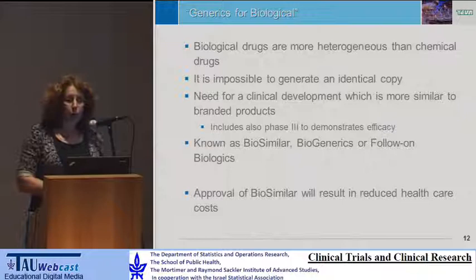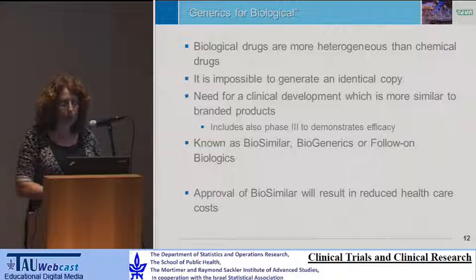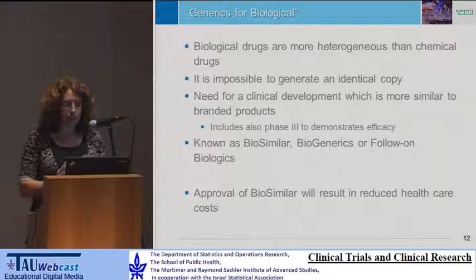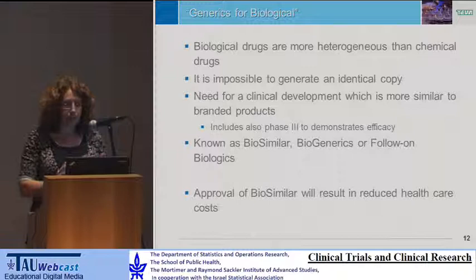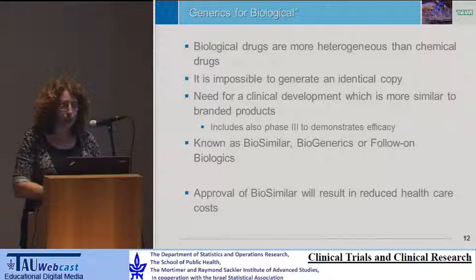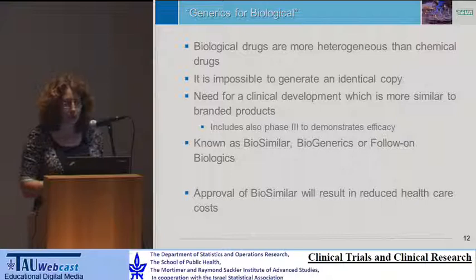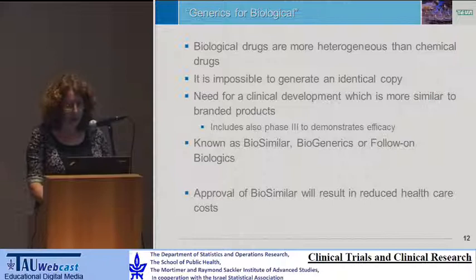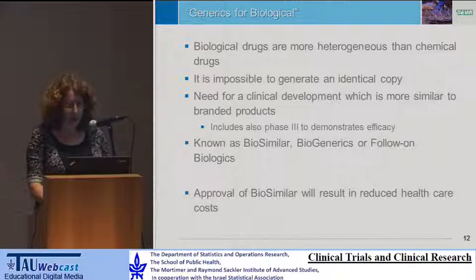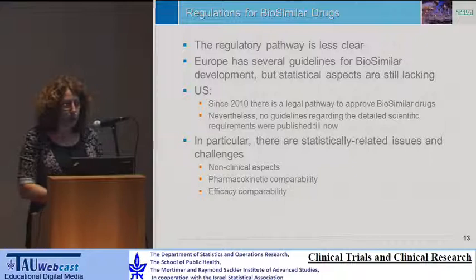What I described is the usual process for generics of chemical drugs, but not for biologics. The problem with biological drugs is that they are more heterogeneous, and it is understood that it's impossible to get an identical copy, in contrast to chemical drugs. So there is a need for a clinical development program more similar to the branded product — in particular, we need a phase three study to demonstrate efficacy. Because they cannot be identical, we do not use the term 'generic' for biologics, but rather 'biosimilar,' 'biogenerics,' or 'follow-on.' If a biosimilar is approved, it should result in reduced healthcare costs.